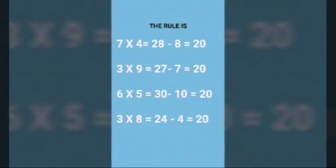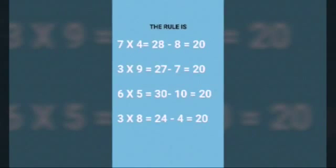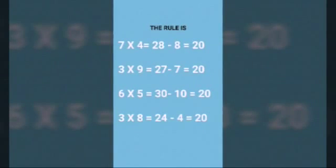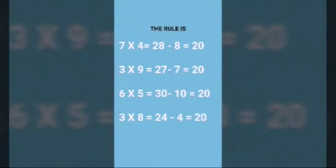Here's the answer. 7 times 4 is 28, and subtracting the third number gives you 20 in all the rows. So number 3 will be the one replacing the question mark.